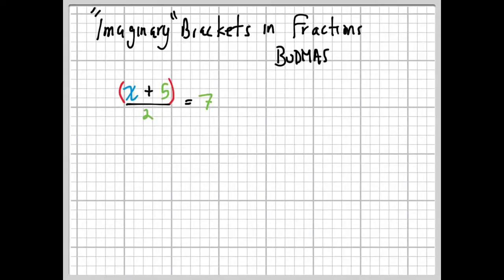what we really have is imaginary brackets—hence the title here. The X plus 5 is in brackets. Well, brackets in BODMAS comes last, right? So what we need to do is actually get rid of this 2 first. This whole thing is being divided by 2. So what we can do is rewrite this with the brackets in there, and since it's being divided by 2, we're going to multiply by 2, and then we'll multiply the other side by 2 as well.